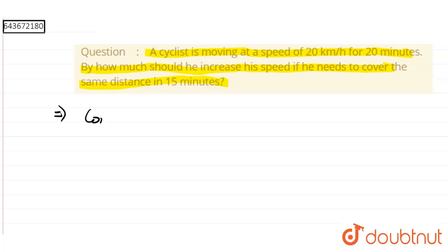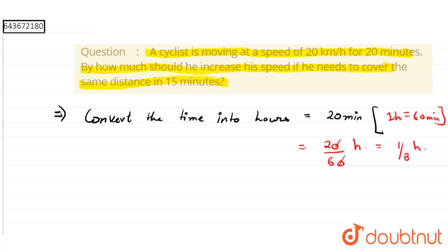into hours. So it's given 20 minutes, and we know that 1 hour equals 60 minutes. So we can write 20 minutes, we divide 20 by 60 hours, so this reduces to 1/3 hour. Okay, now